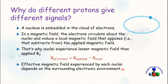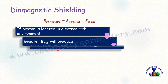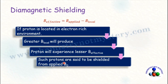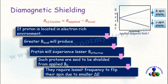If a proton is located in an electron-rich environment, a greater B_local is produced, so the proton experiences a lesser B_effective. Such protons are said to be shielded from the applied magnetic field. Because the energy difference between alpha and beta spin states is proportional to the effective field, shielded protons have a smaller energy difference and therefore require a lower frequency to flip their spin.